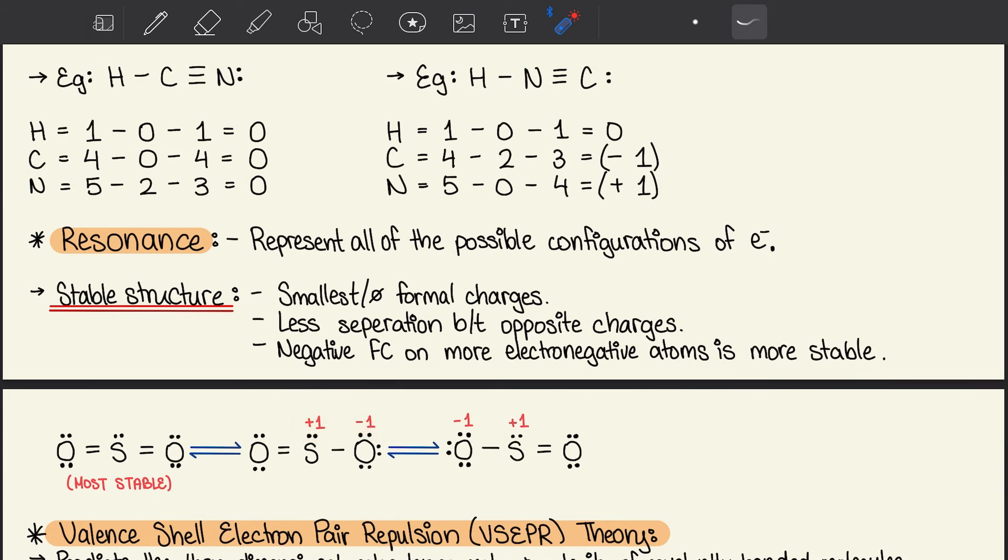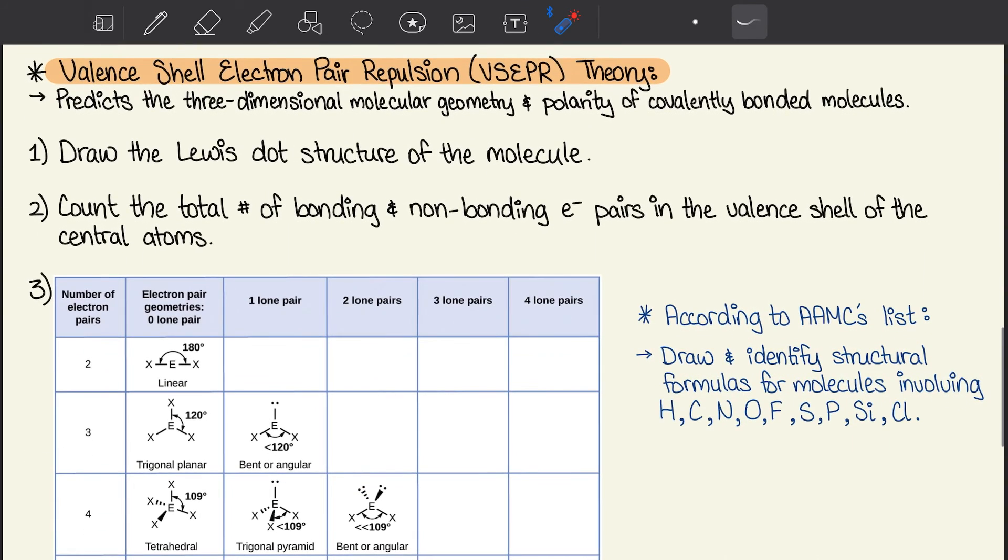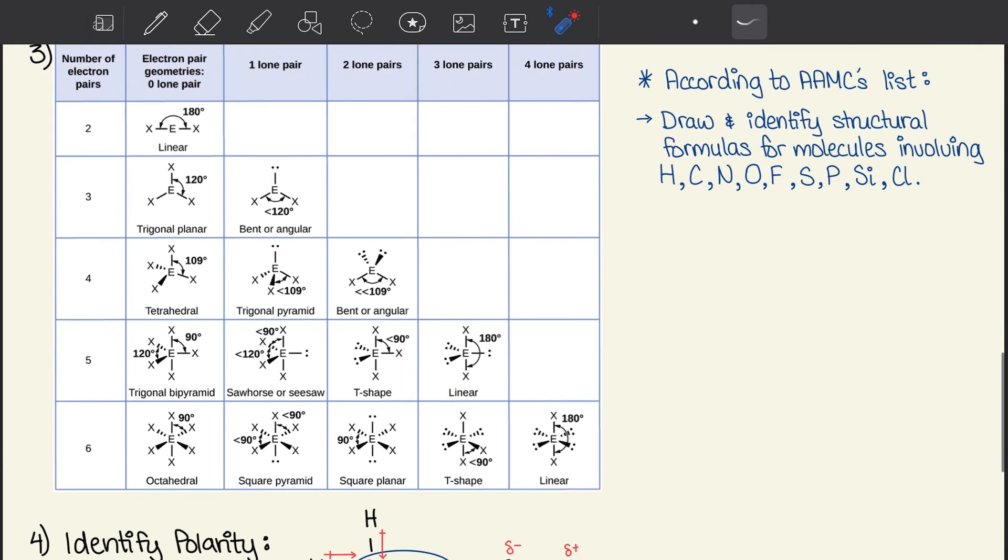Moving on to valence shell electron pair repulsion, also known as VSEPR theory. It predicts the three-dimensional molecular geometry and polarity of covalently bonded molecules. First, draw the Lewis dot structure of the molecule. Two, count the total number of bonding and non-bonding electrons in the valence shell of the central atoms. Three, figure out the geometry of the molecule. And four, identify its polarity. According to the AAMC's list, draw and identify structural formulas for the molecules provided. Just be able to identify their geometry and their polarity in different scenarios.